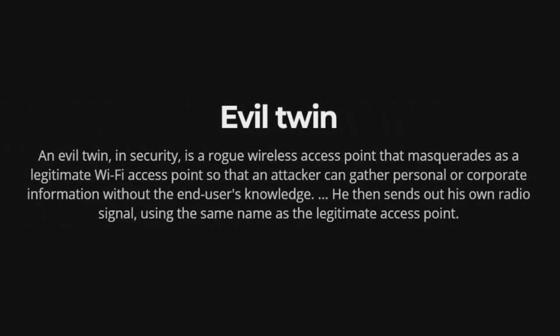Evil Twin: In security, an evil twin is a rogue wireless access point that masquerades as a legitimate Wi-Fi access point so that an attacker can gather personal or corporate information without the end user's knowledge. The attacker sends out his own radio signal using the same name as the legitimate access point.